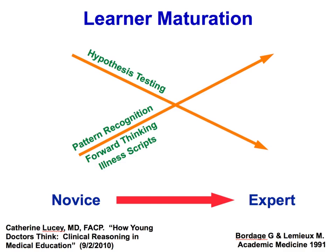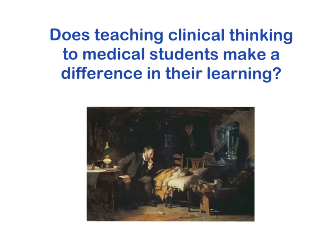Teaching students about how they think — I'm not sure there's a shortcut, because you've got to know the underlying basic sciences first. It's like whether teaching a child to read at age four versus six makes them a better reader at twelve. But I think it's helpful for them to see the structure upon which they're going to put their information. Calling it to their attention is a great approach.